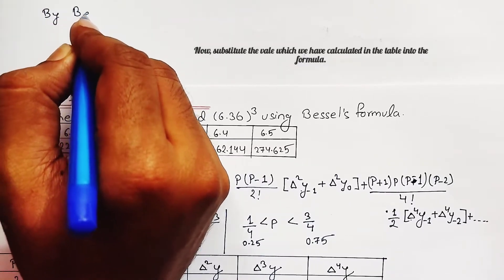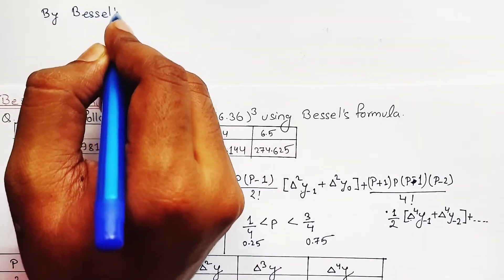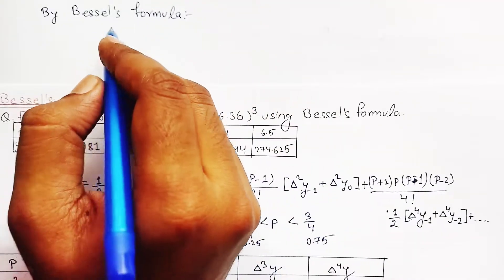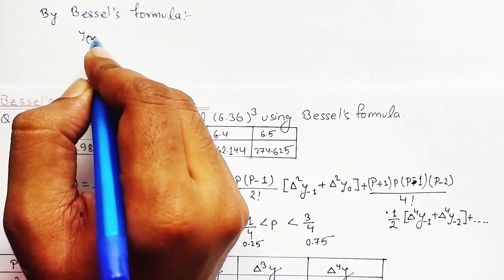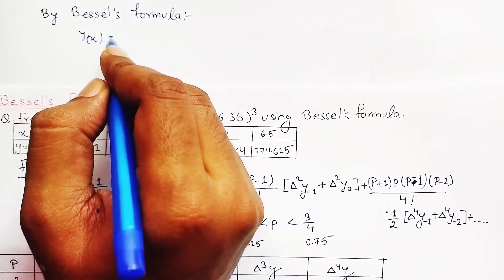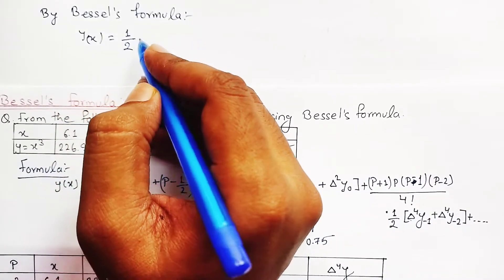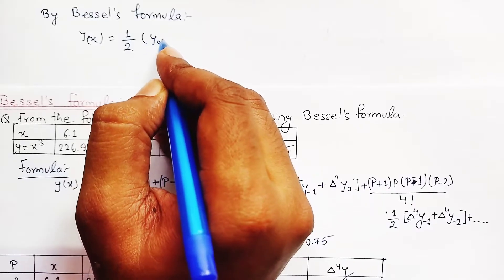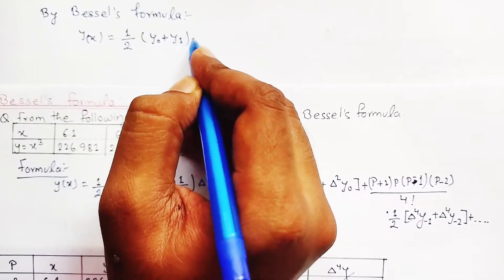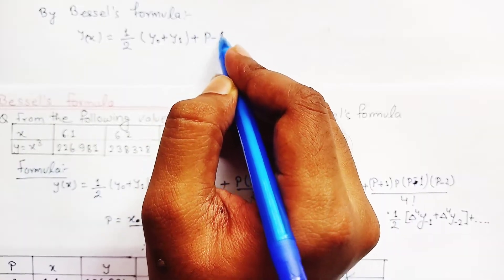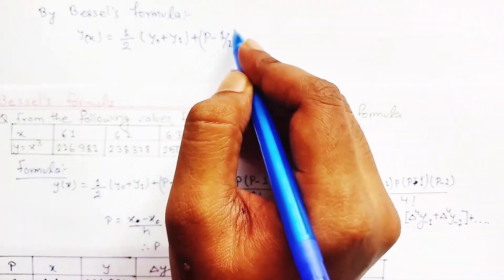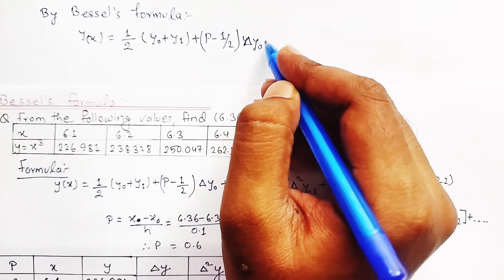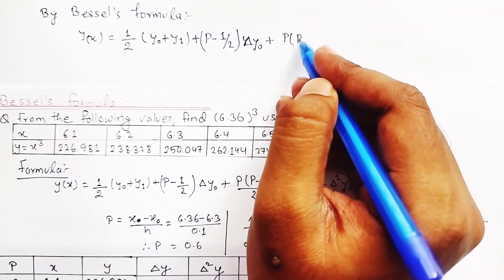By Bessel's formula, y(x) equals (1/2)(y₀ + y₁) plus (p − 1/2)·Δy₀.